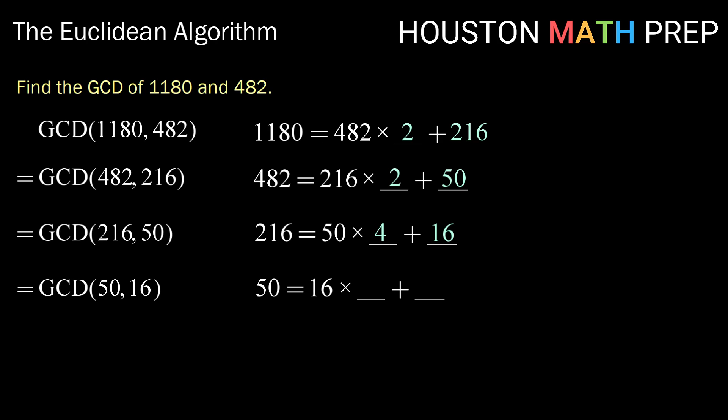Rewriting 50 as 16 times something plus something, we get 50 is 16 times 3 plus 2. So we have that our original GCD is now the greatest common divisor of 16 and 2. Since 16 is a multiple of 2, we can no longer go any lower and we can see that our GCD is 2. So that means that the GCD of 1180 and 482 is 2.